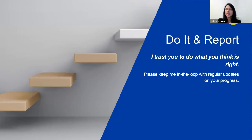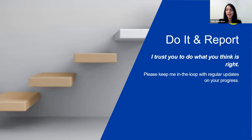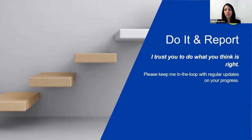The third level is: 'I trust you to do what you think is right. Please keep me in the loop with regular updates or progress.' You are trusting the employee to make the decision themselves — go away, look at the alternatives, make the decision the way you think you would if you were the owner. The nuance is I still want to be kept in the loop — I don't want you to make decisions without circling back and letting me know what you decided. If there's something you want to be kept abreast of but don't want decision-making authority over, this is level three delegation.